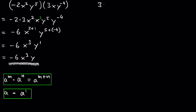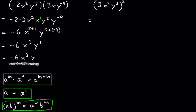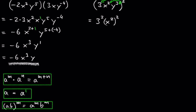Let's look at 3x squared times y cubed, and raise this to the second power. We can use the power of product law in this example, which says we can distribute the exponent to each factor. So we get 3 squared times x squared.